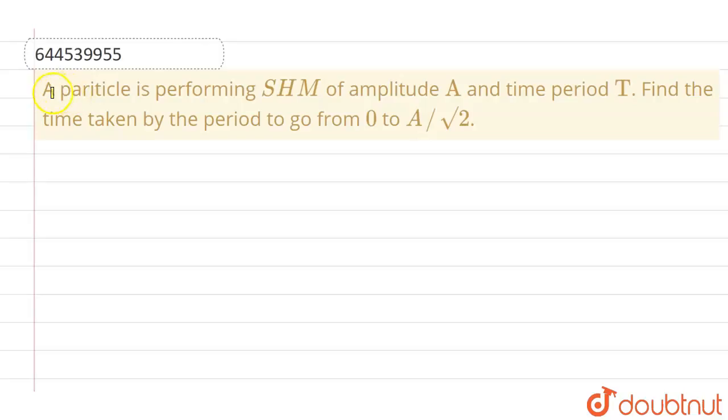Hello everyone, if we talk about this question, the given question is: a particle is performing simple harmonic motion of amplitude A and time period T. We have to find the time taken by the particle to go from x equals 0 to x equals A by root 2.